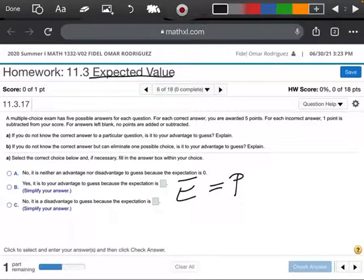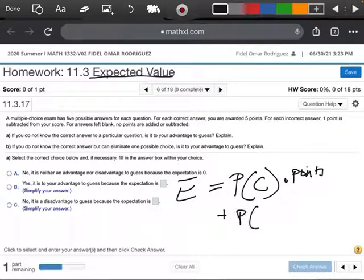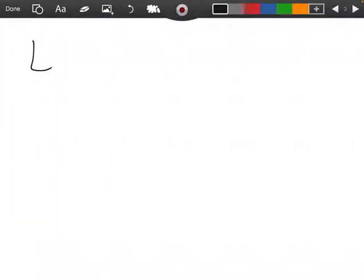We're going to take the probability that we guess correctly, and then we're going to multiply it by our points. And then we're going to add the probability that we get it wrong, and we're going to multiply that by the points that we're going to be subtracting, right? Okay, so let's see, we have five answers. So I'm going to do this over here on the next slide.